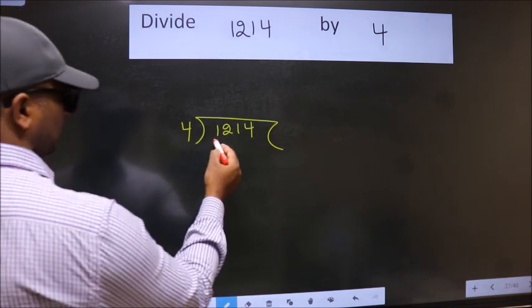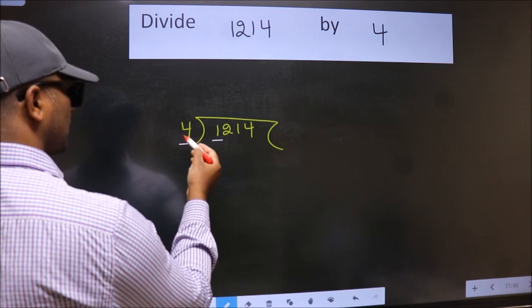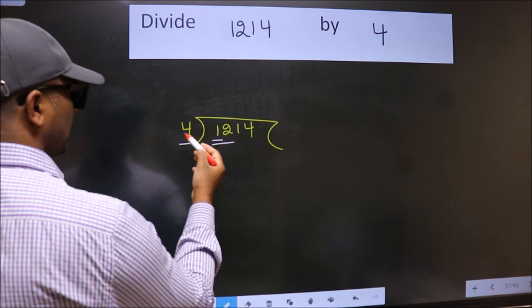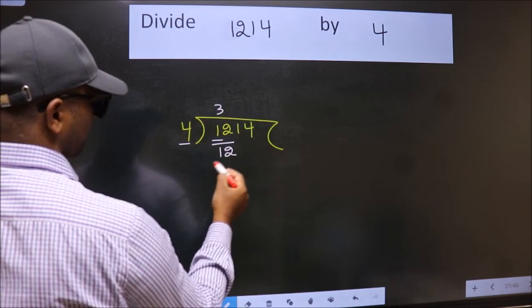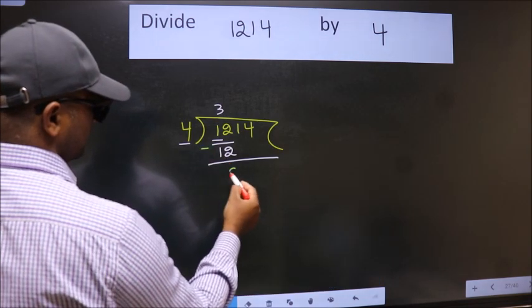Here we have 1, here 4. 1 is smaller than 4, so we should take two numbers: 12. When do we get 12 in the 4 table? 4 times 3 is 12. Now we subtract and get 0.